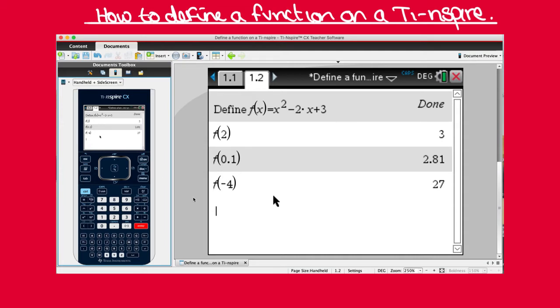So we write G(X) this time. The assigned equals key is control menu. Now define your function. So 4X